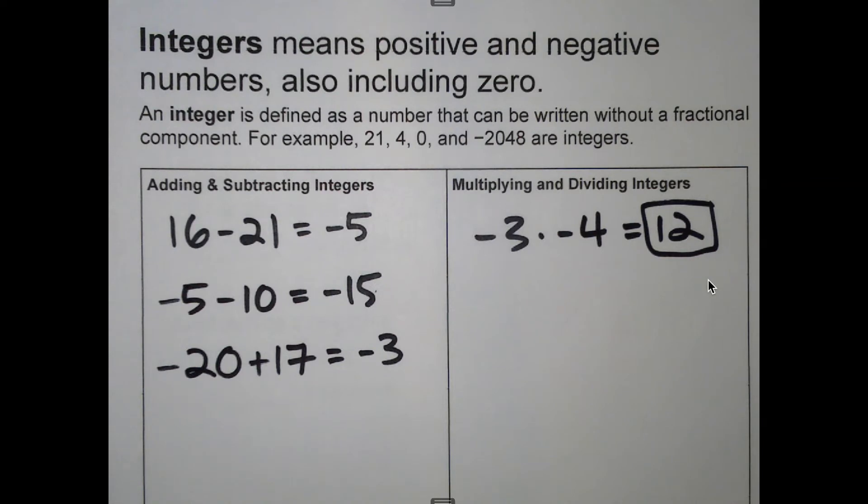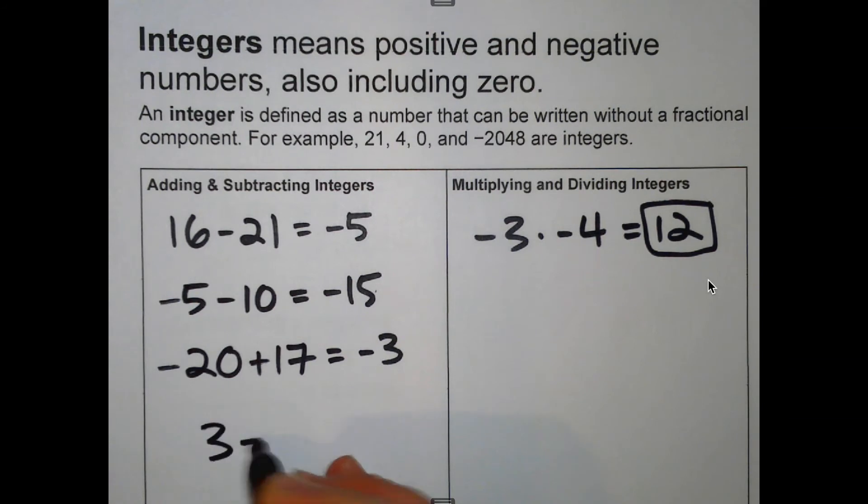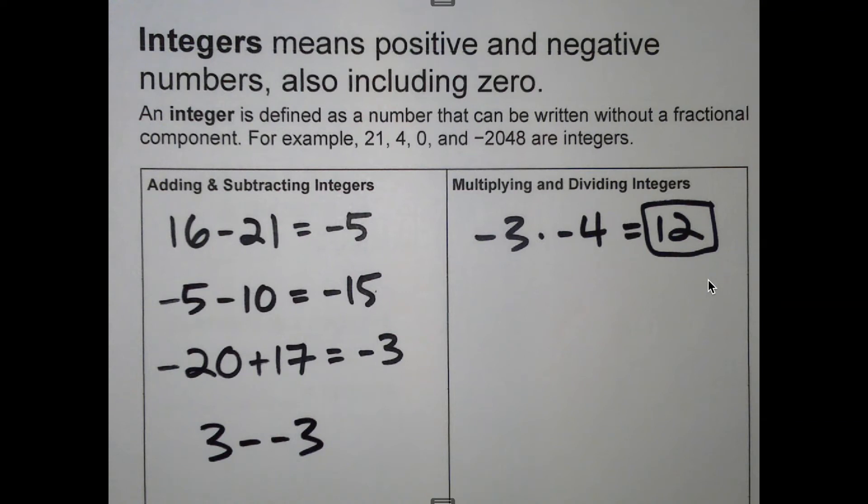Sometimes with integers also, you have two negatives in a row. So for example, $3 minus negative $3. In this case, it's a little bit like a negative and a negative. They are right next to each other. And so then they become a positive.